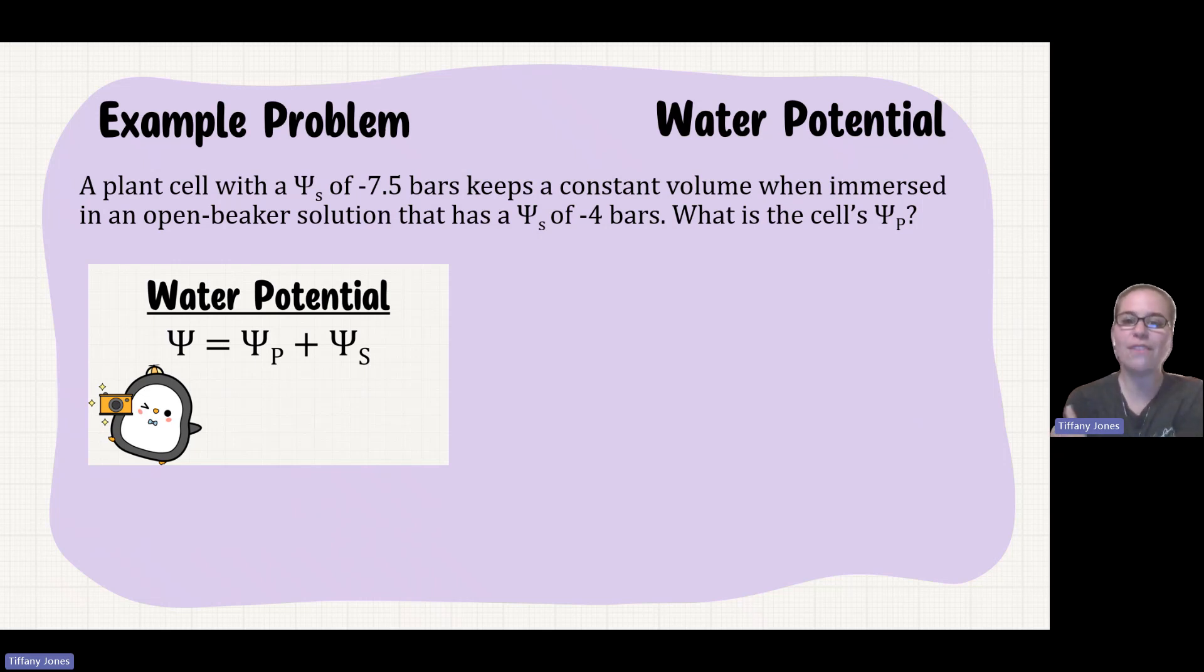So we first have to think about, well, what is this telling us? Like what values do I have? So I know that the water potential is equal to the pressure potential plus the solute potential. And I can go ahead and sub in the solute potential of negative 7.5 bars. And so this is going to be the water potential of my plant cell. Now, I need to also figure out the water potential of the surrounding solution.